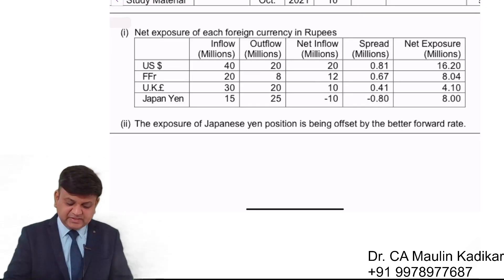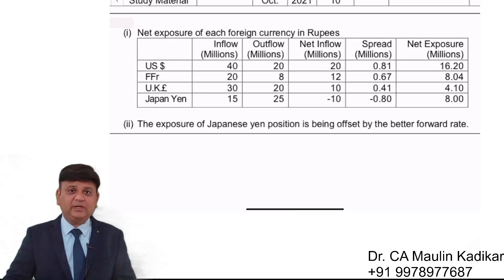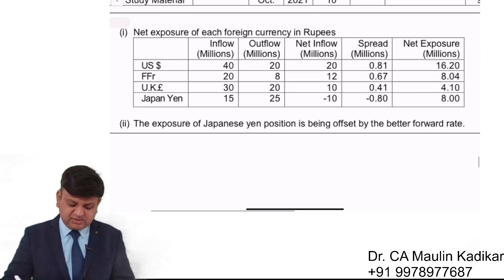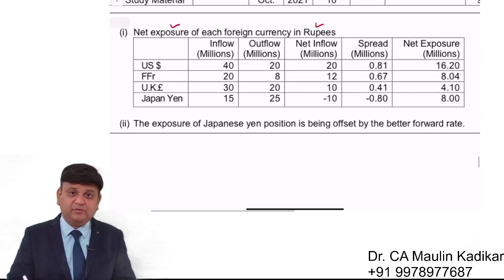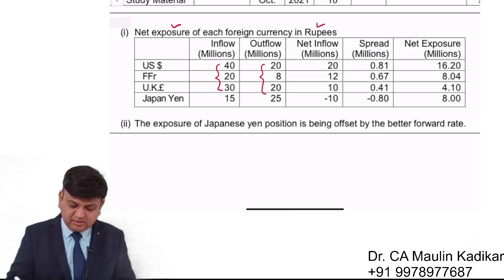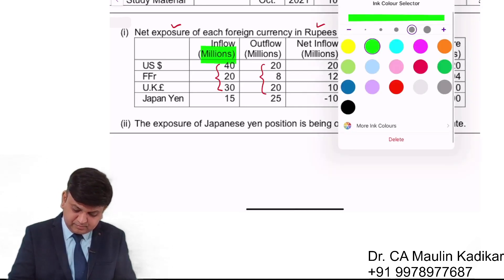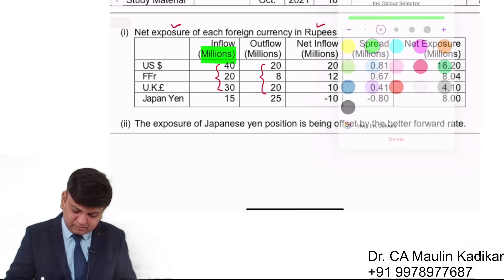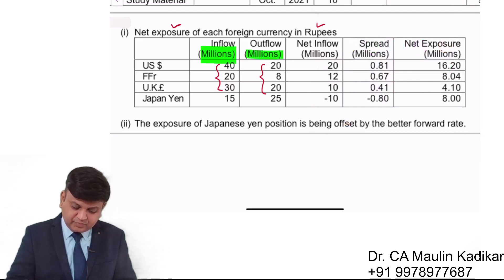The working is required to be made like this: net exposure of each foreign currency in terms of rupees. All these values are in million.